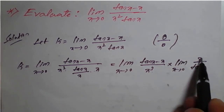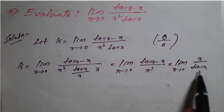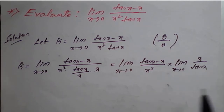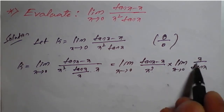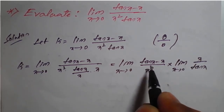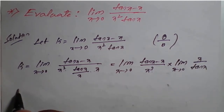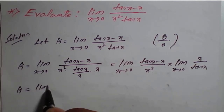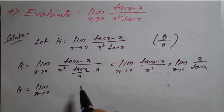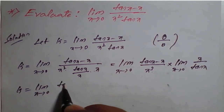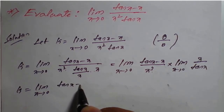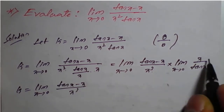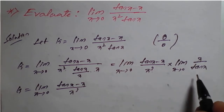As we know, the limit of x upon tan x as x tends to 0 is always 1. So we replace that factor with 1. Therefore k equals the limit as x tends to 0 of tan x minus x divided by x cubed, multiplied by 1.